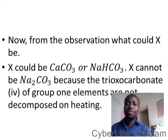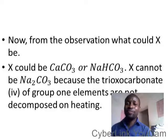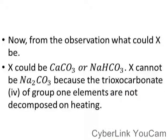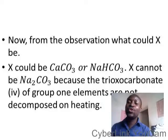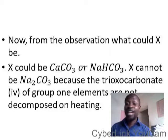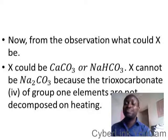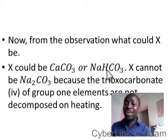Now from the observation, what could S be? This is a rhetorical question and you need to calm down and watch it again to have full understanding. S could be CaCO3 or Na2CO3. However, S can never be Na2CO3. Why? Because the trioxocarbonate(IV) salts of group 1 elements are not decomposed by heat. When you apply heat on the trioxocarbonate(IV) salts of group 1 elements, they melt — they don't break down, they don't decompose. So that's the reason it is either CaCO3 or MgCO3, because these two can be decomposed by heat.